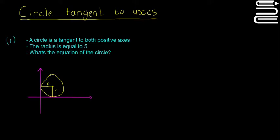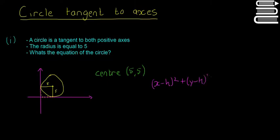What it means by tangent to both positive axes is it's in this corner here. If it was not both positive axes, it could be in the other quadrants. But since they told us both positive axes, the center point is 5 across and 5 up, so the center point has to be (5, 5). Now that we have the center point and the radius, we can find the equation: x minus 5 squared plus y minus 5 squared is equal to 25.